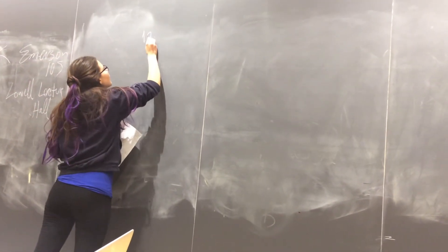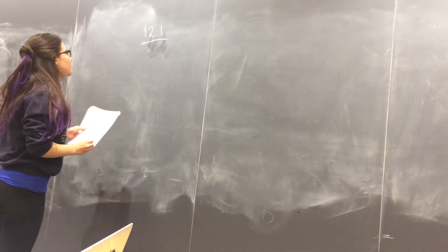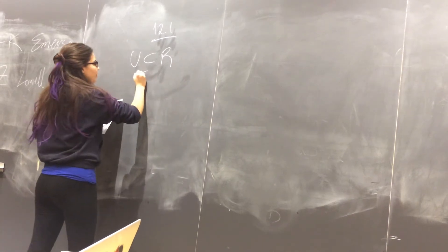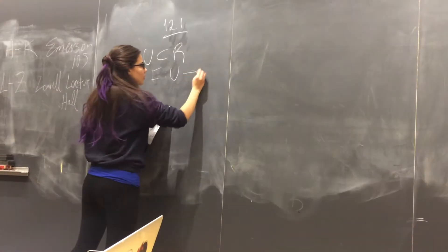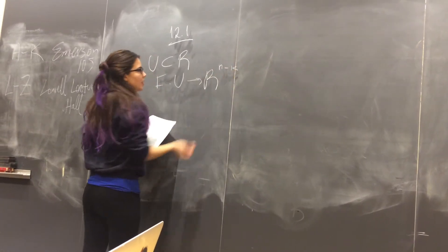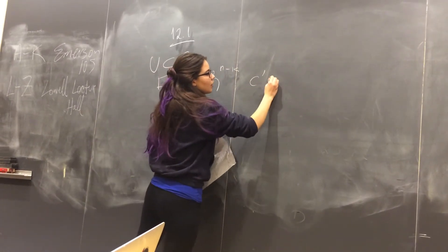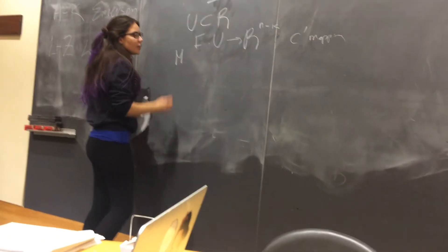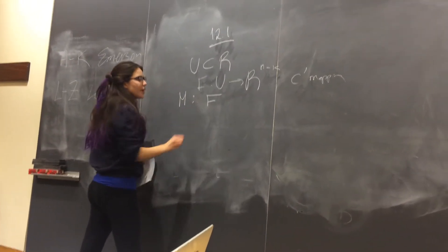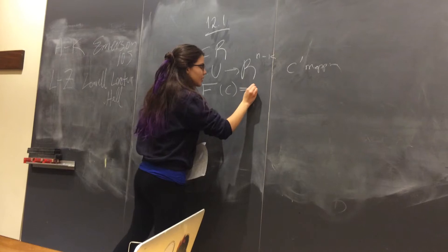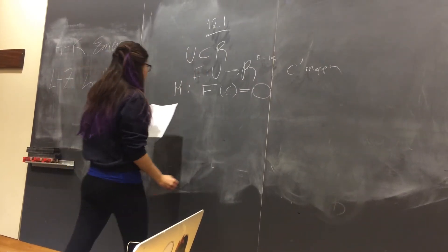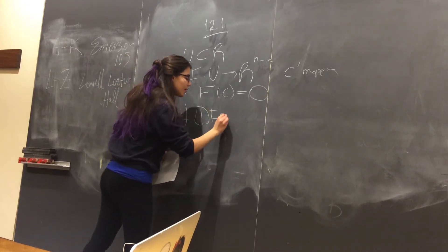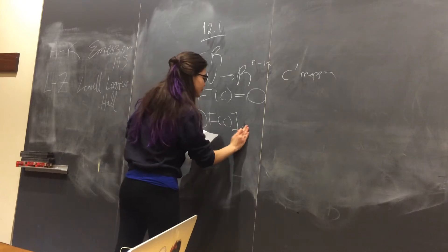I'm presenting proof 12.1. We have U in R which is an open subset and we have F which is a map from U to R^(M-K), a C1 mapping which means that all the partial derivatives are continuous. And we have the manifold M which is defined by the constraint that F of C equals zero.